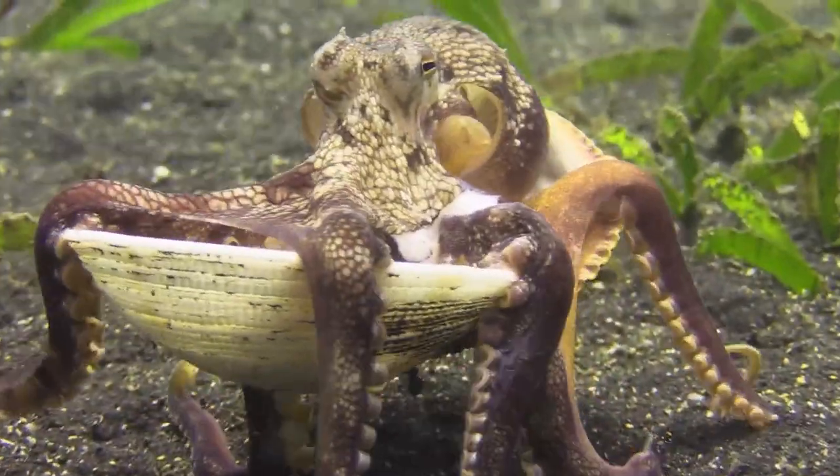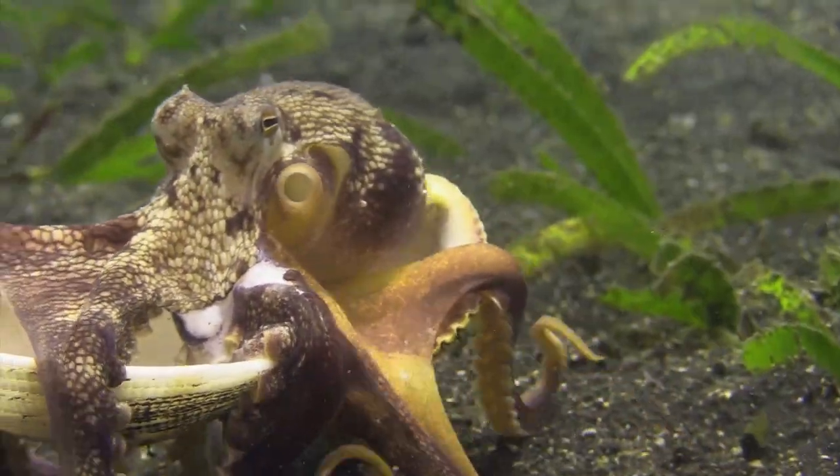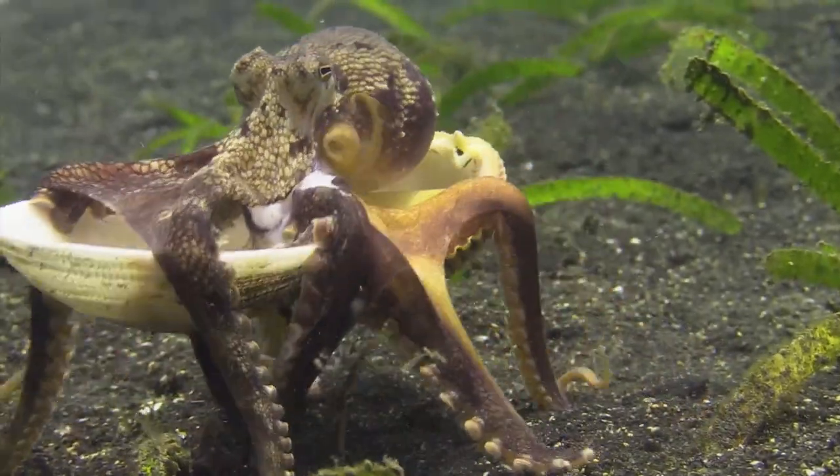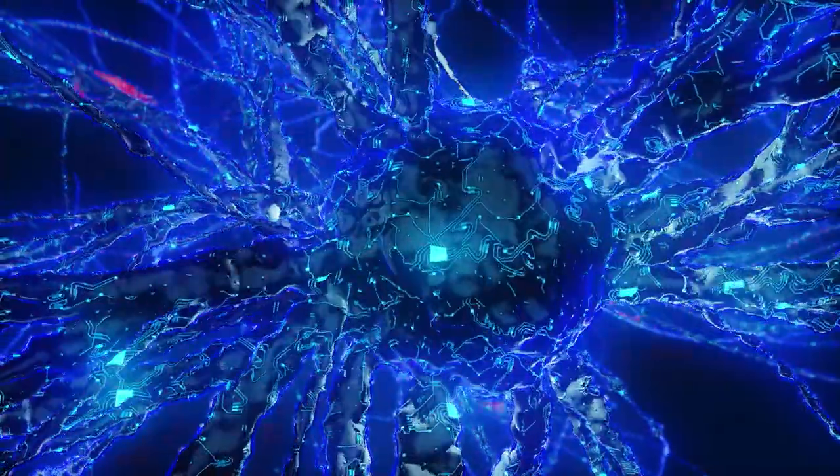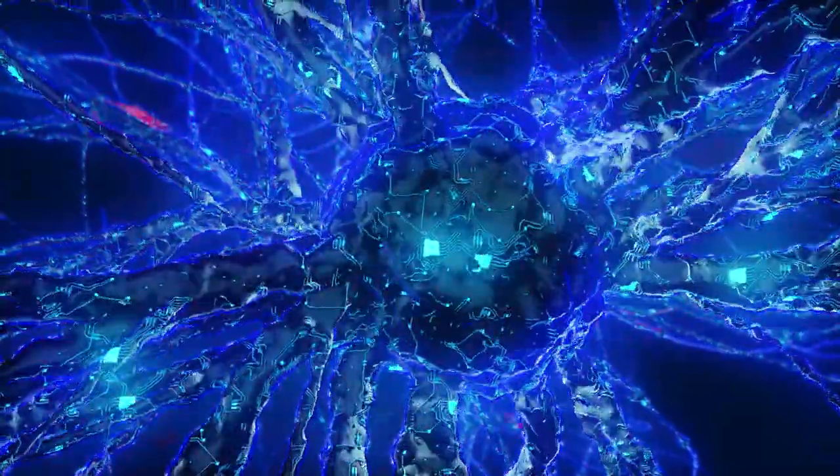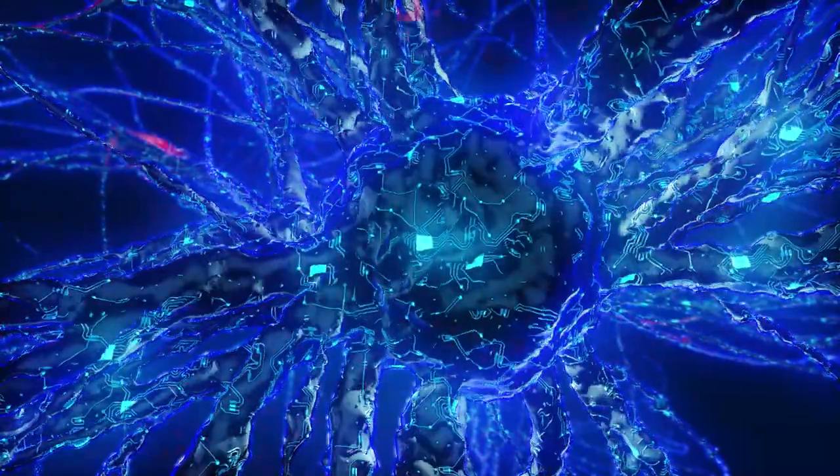Instead, its brain has a behavioral library. The octopus sees what it wants, and a behavioral response is triggered to grab it. Its brain sends that signal through its body network, and the neurons in its arms pick up the signal, and its arm commands the octopus to pick it up. Imagine if your arms commanded you to pick things up. It just doesn't work. We're not built the same.